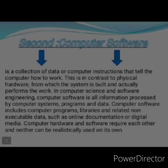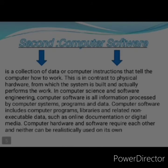Second, software computing. Software is a collection of data or computer instructions that tell the computer how to work. This is in contrast to the physical hardware from which the system is built and actually performs the work. In computer science and software engineering, computer software is all information processed by computer systems, including programs and data. Computer software includes computer programs, libraries, and related non-executable data, such as online documentation or digital media. Computer hardware and software require each other and neither can be realistically used on its own.